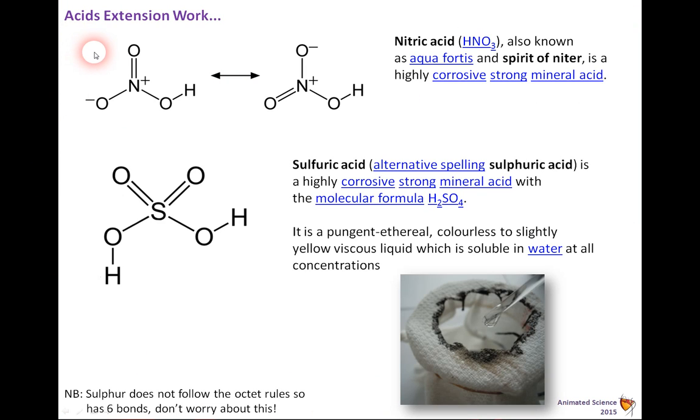Here we can look at some extension work, thinking about acids. Nitric acid, which makes nitrates, is a really complex molecule there. You've got nitrogen in the middle which has got a positive, so it must be missing an electron. You've got oxygen on a single bond which has got a negative, so it must have an extra electron. You've got an oxygen on a double bond, and then an OH. Nitric acid, or HNO3, also known as aquafortis or the spirit of nitre, is a strong, corrosive mineral acid. We don't need to know the structure, but if you're interested in A-level chemistry, that's the way you're heading.